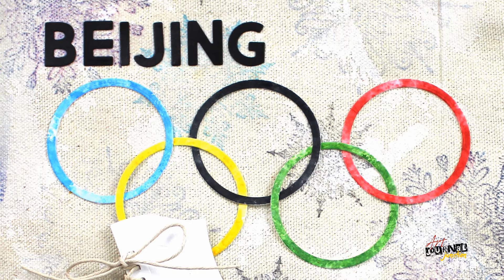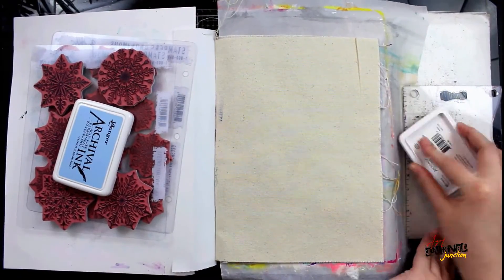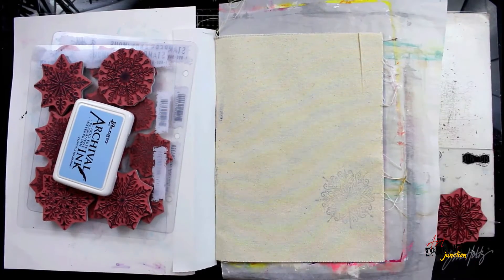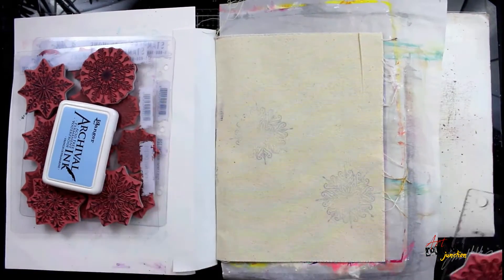Hey everybody, today I'm going to be making an art journal page inspired by the Winter Olympics. I'm working in my Dina Wakely Media journal on one of the canvas pages, and I'm going to cover the entire background with snowflake stamps in a bunch of colors of archival inks.